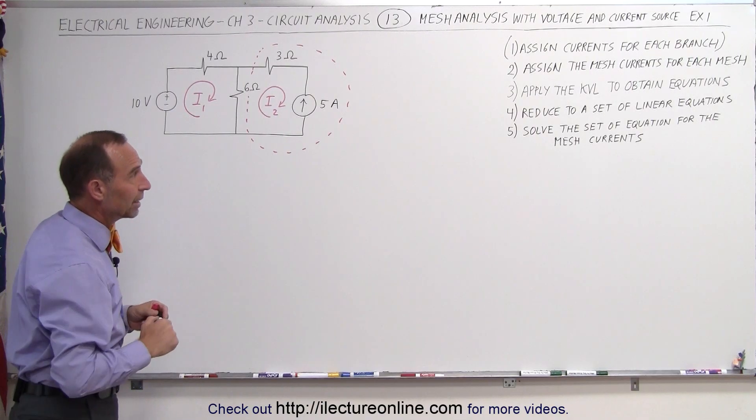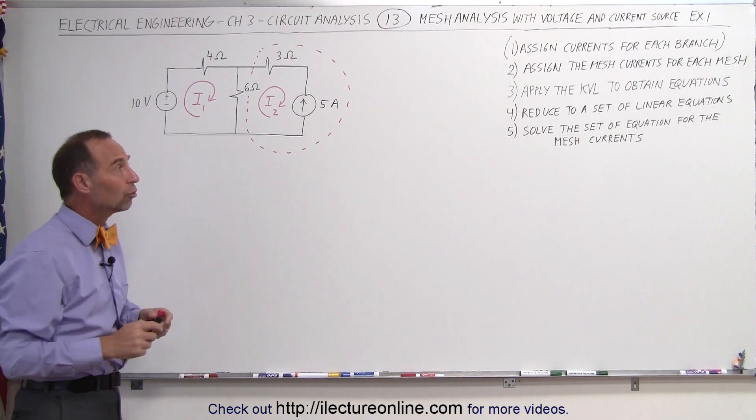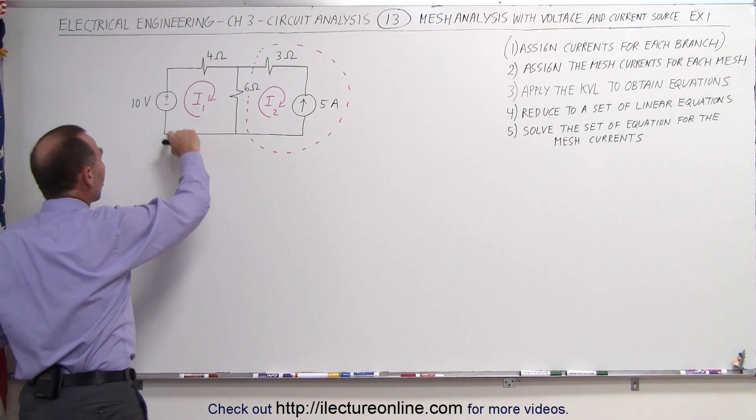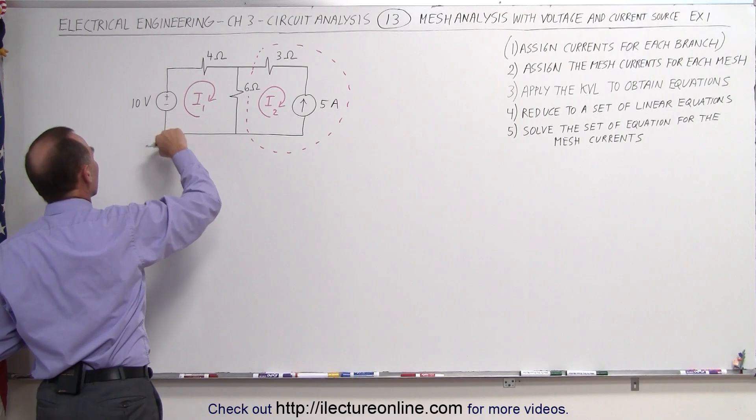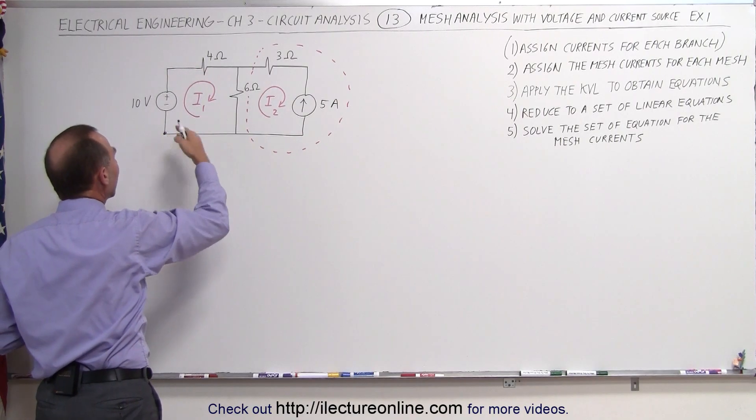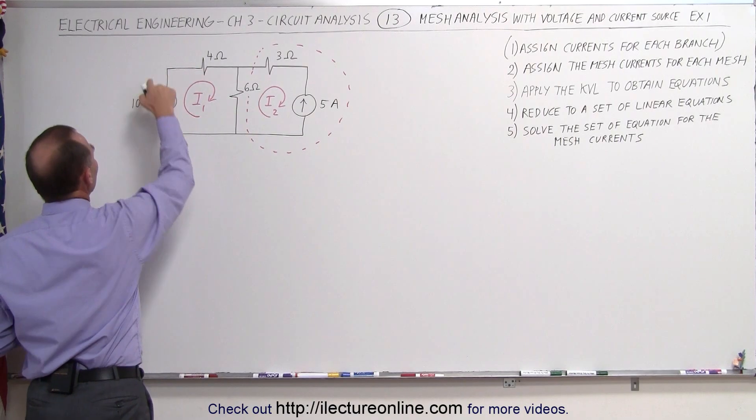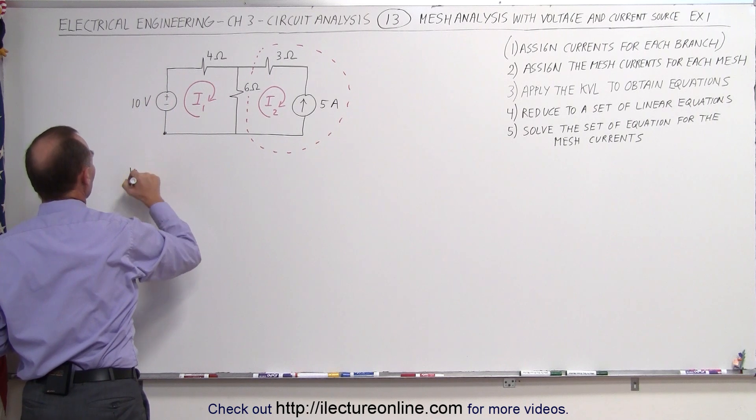So for part three there, apply the Kirchhoff voltage law to obtain the equations. Let's start with just the one equation for I1. We're going to start at this corner, go around the loop and add up all the voltages. Here we have a voltage rise, a 10 volt rise.